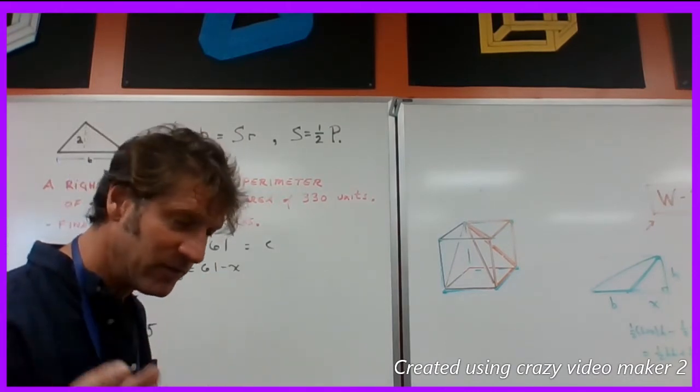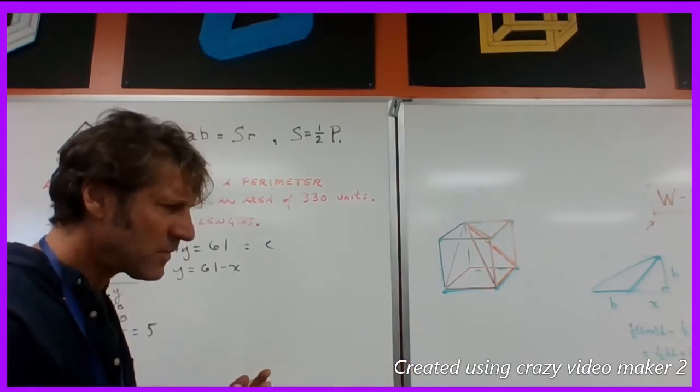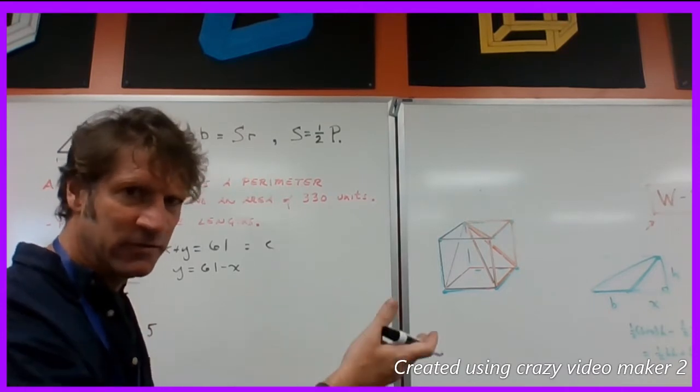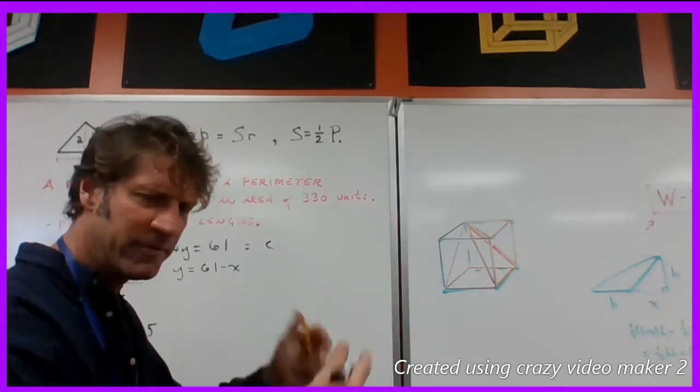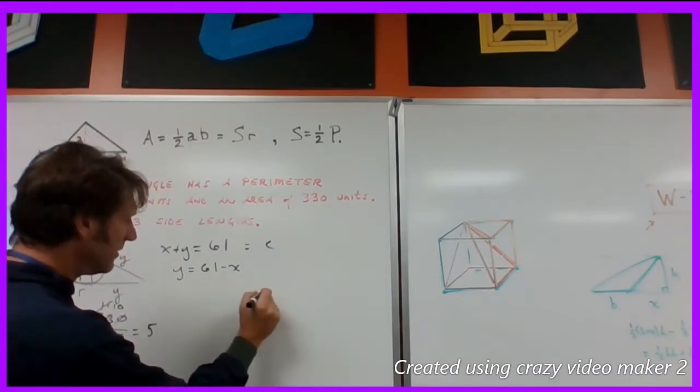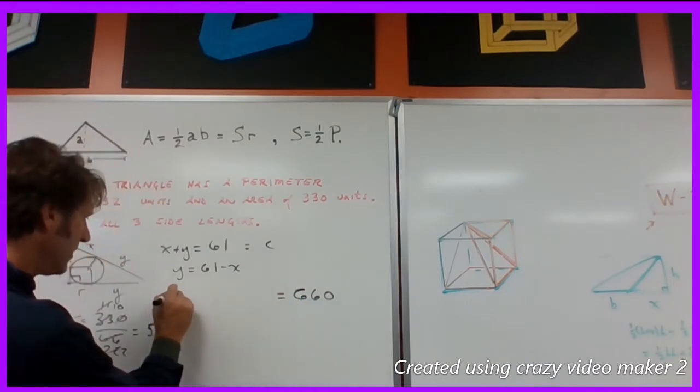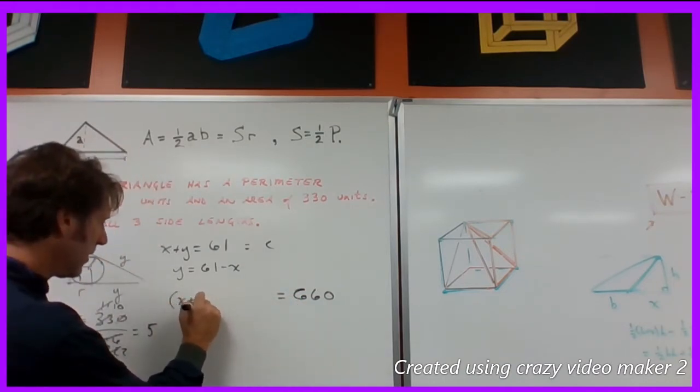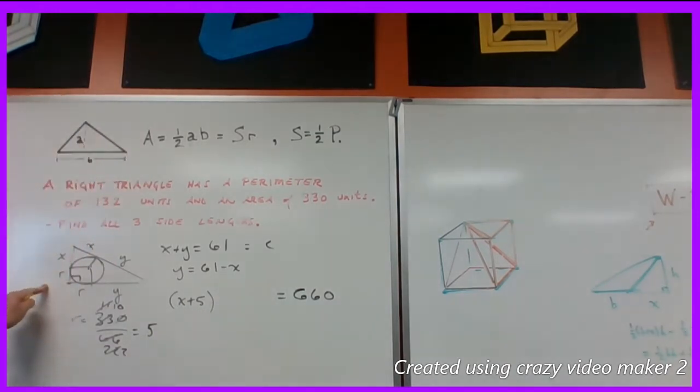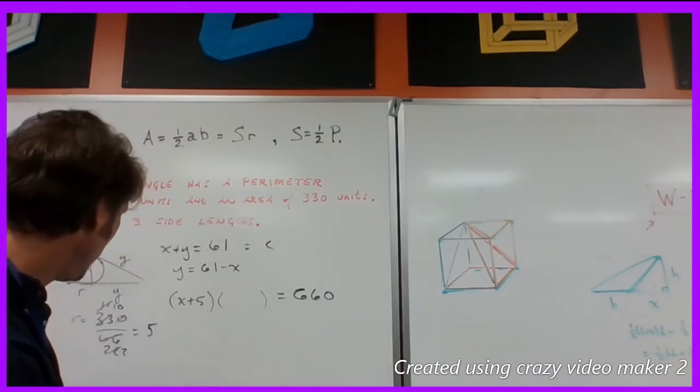Which I'm going to double because one half leg times leg equals the area. So leg times leg is twice the area. So just to distribute that one half. So here we go. That 660 happens to be x plus 5 because it's x plus r there. Times. Times.